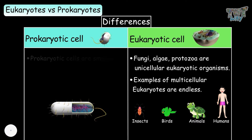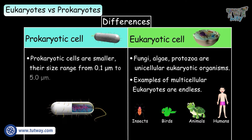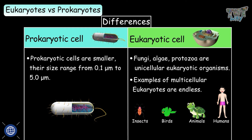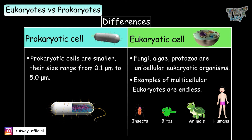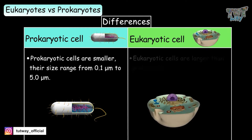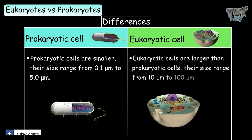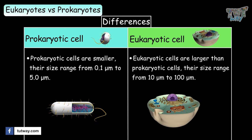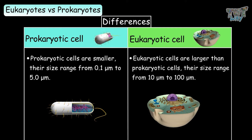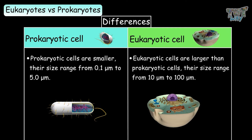Prokaryotic cells are smaller — their size ranges from 0.1 to 5 micrometers in diameter. Eukaryotic cells are larger than prokaryotes — their size ranges from 10 micrometers to 100 micrometers in diameter.